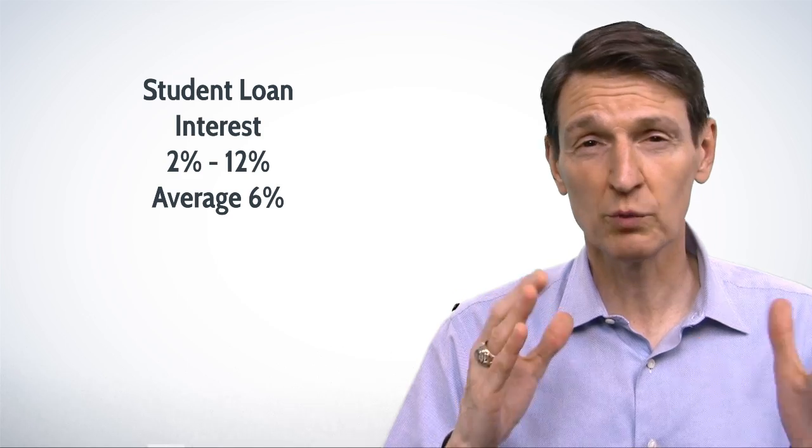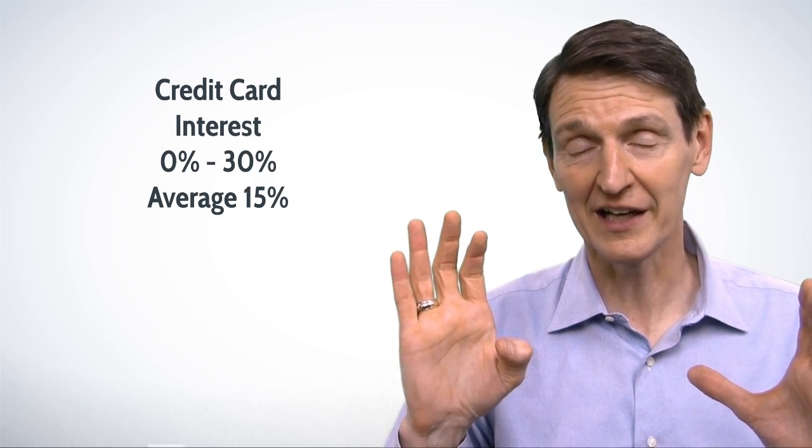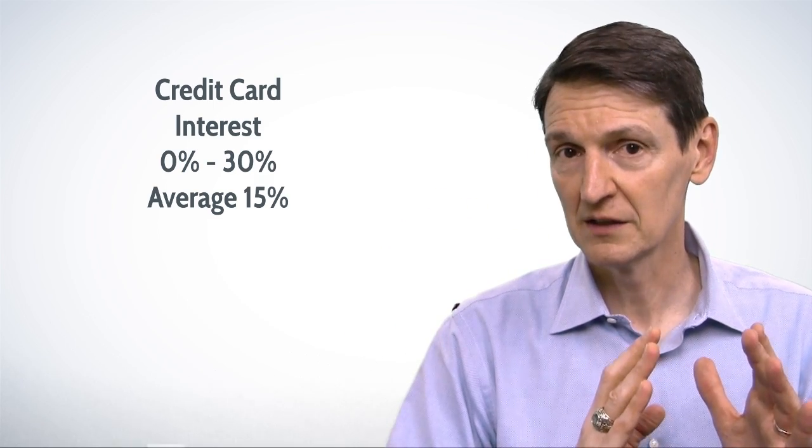And then what are the interest rates that you might pay for these kinds of loans? So for student loans, they run from 2 to 12%, average about 6. For credit cards, they run from 0 to 30%. Yes, that high. Average about 15. For auto loans, 0 to 13%, average 4. And for mortgages, 3 to 6%, average around 4%.